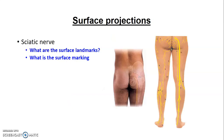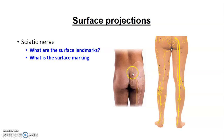You need to know the surface landmark of the sciatic nerve: draw a line from the ischial tuberosity to the greater trochanter, and midway through that is where the sciatic nerve passes. Remember it is infrapiriformic.